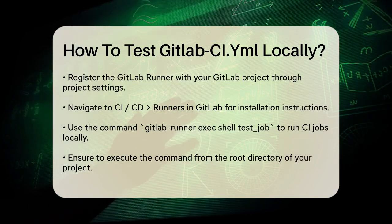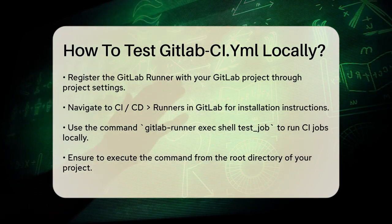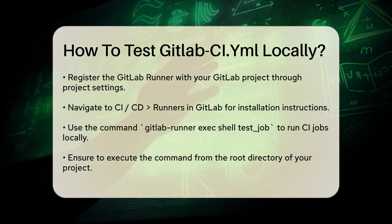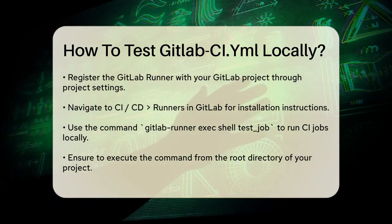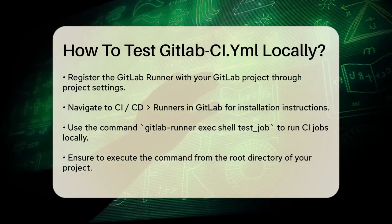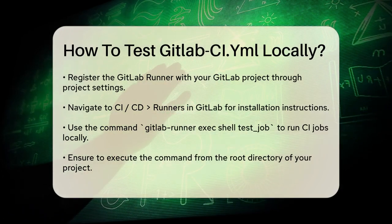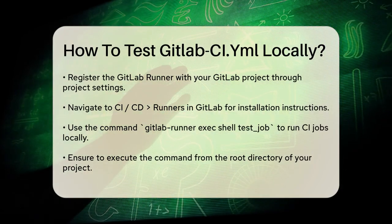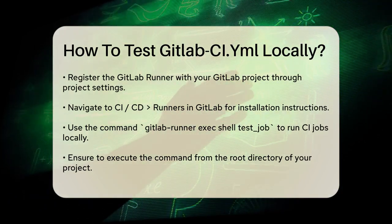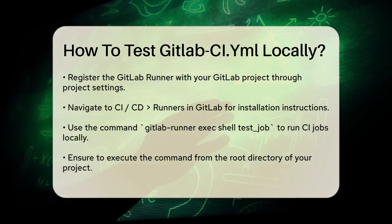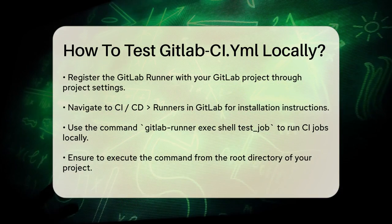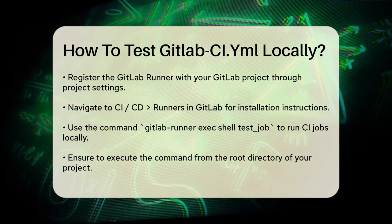Once the runner is set up, you can use the GitLab Runner command to execute your CI jobs locally. Here's an example command: gitlab-runner exec shell test-job. This command tells the runner to execute the test job defined in your .gitlab-ci.yml file using the shell executor.